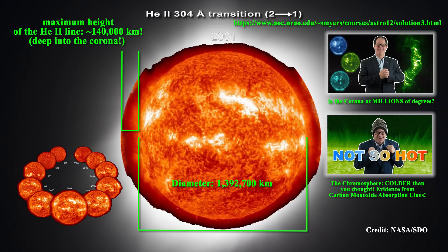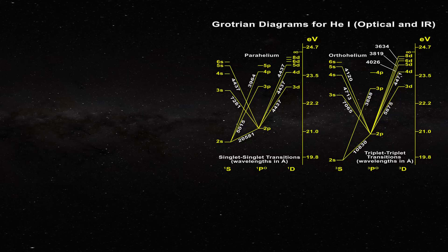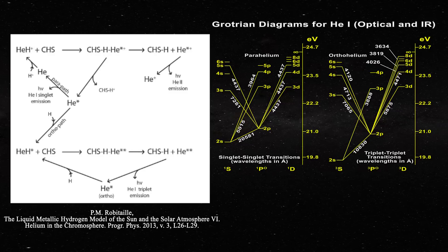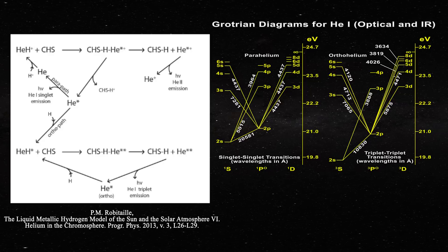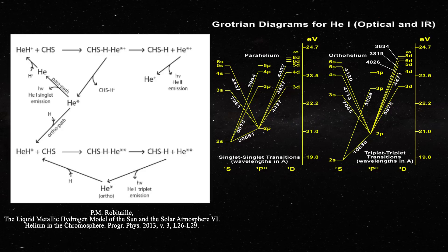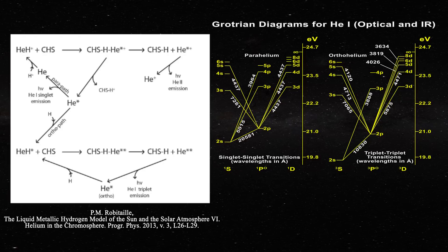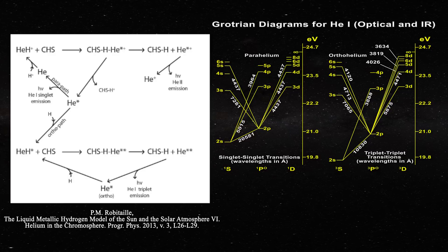Obviously, any claim that the corona is at millions of degrees is simply not reasonable. As a result of all this, it is extremely likely that helium is participating in chemical processes on the Sun. That is why we can see so many helium emission lines in the chromosphere, not only from helium-1 but most importantly from helium-2. This is also why we should consider helium to be acting as a group 2a element on the Sun. One of the many problems with the standard solar model is that it continually ignores the possibility that chemical reactions are taking place on the Sun. Chemical reactions can indeed be responsible for promoting electrons to higher orbitals prior to photon emission and relaxation back to lower orbitals.